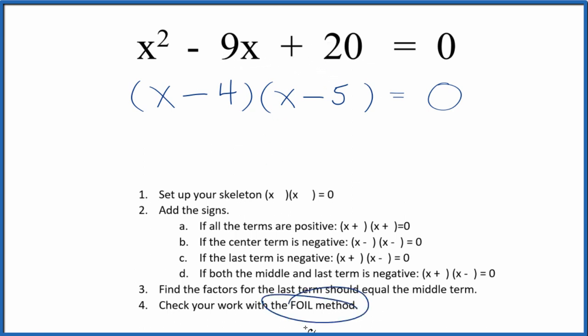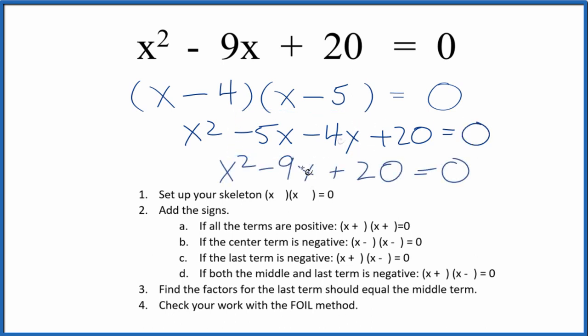Let's check our work using the FOIL method. First term, outside, inside, and last. Negative 4 times negative 5 is positive 20. Then we can combine these terms here. And we end up with the same thing that we started with. So we know we did this part correctly.